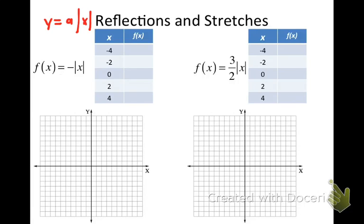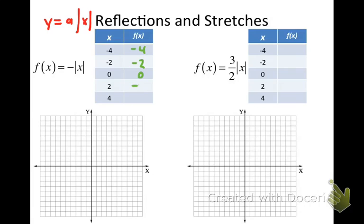What happens if a is negative? If a is negative 1, then we have negative 1 times the absolute value of negative 4. The absolute value of negative 4 is positive 4, but when you multiply by negative 1, you get negative 4. That's going to happen all the way around — whatever we would have gotten for the absolute value of these inputs, we're now getting the opposite. So we get negative 2, 0, negative 2, and negative 4.